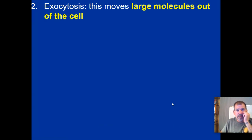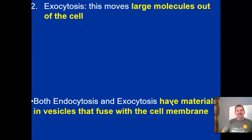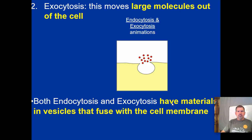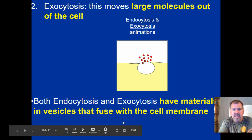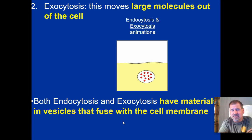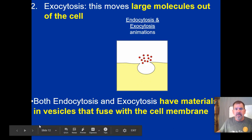Down the middle: exocytosis moves large molecules out of the cell — 'exo' means to exit. Both endocytosis and exocytosis involve materials in vesicles — basically little bubbles — that fuse with the cell membrane, as illustrated in the video clip.